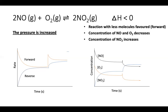Because the forward reaction is favoured, NO₂ continues increasing to a new equilibrium while NO and O₂ go down after their initial brief rise. Note: in a moles versus time graph you won't get this initial jump — the jump for pressure (and sometimes temperature) only appears on a concentration versus time graph.